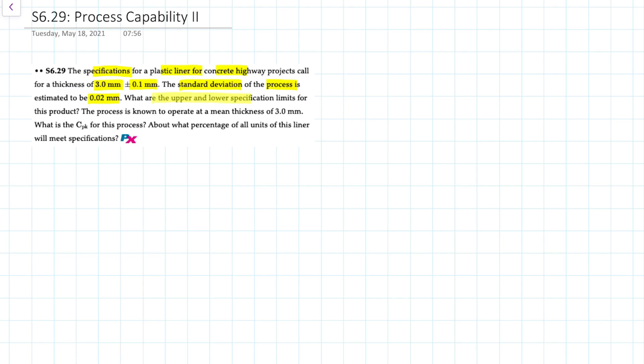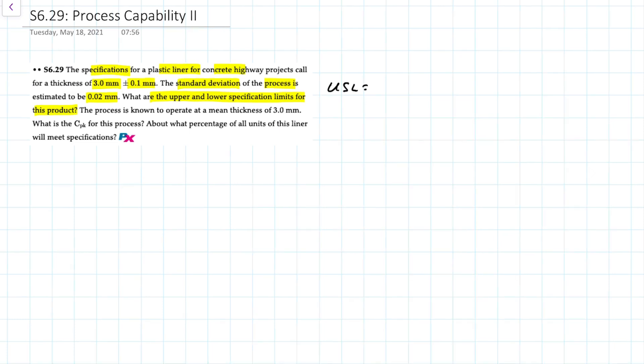We're asked what the upper and lower specification limits for the product are. The upper specification limit and the lower specification limit are equal to 3.0 millimeters plus or minus 0.1 millimeters. That leaves us with an upper specification limit of 3.1 millimeters and a lower specification of 2.9 millimeters.